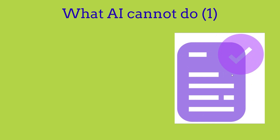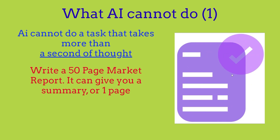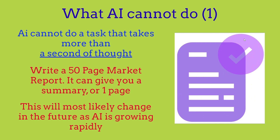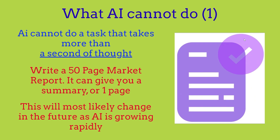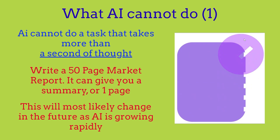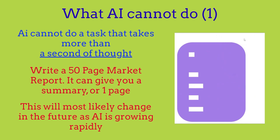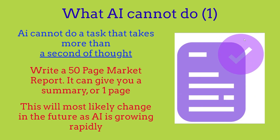Now we're going to cover what AI cannot do. AI cannot do a task that takes more than a second of thought. The first thing it cannot do is write a 50-page market report. It can maybe give us a summary or just one page, but it cannot write a full 50-page market report. This will most likely change in the future as AI is rapidly growing, but as of right now, that is a limitation.